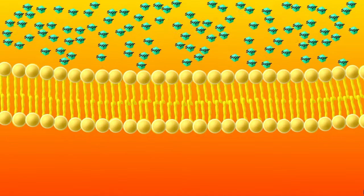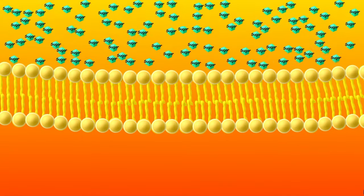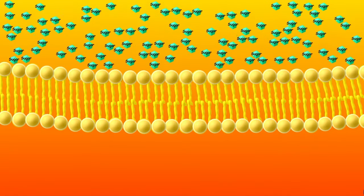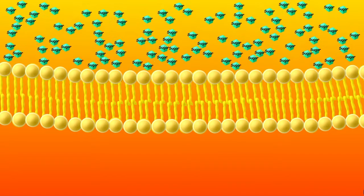But other molecules can't simply move across the phospholipid bilayer. They get blocked, bounced, and rejected like these sugar molecules. But why?